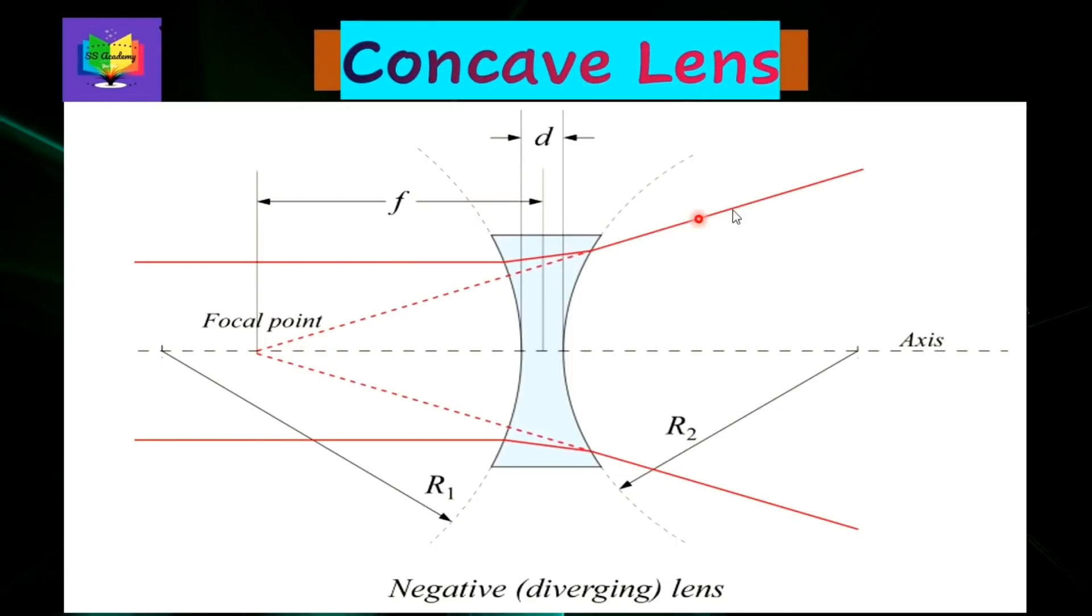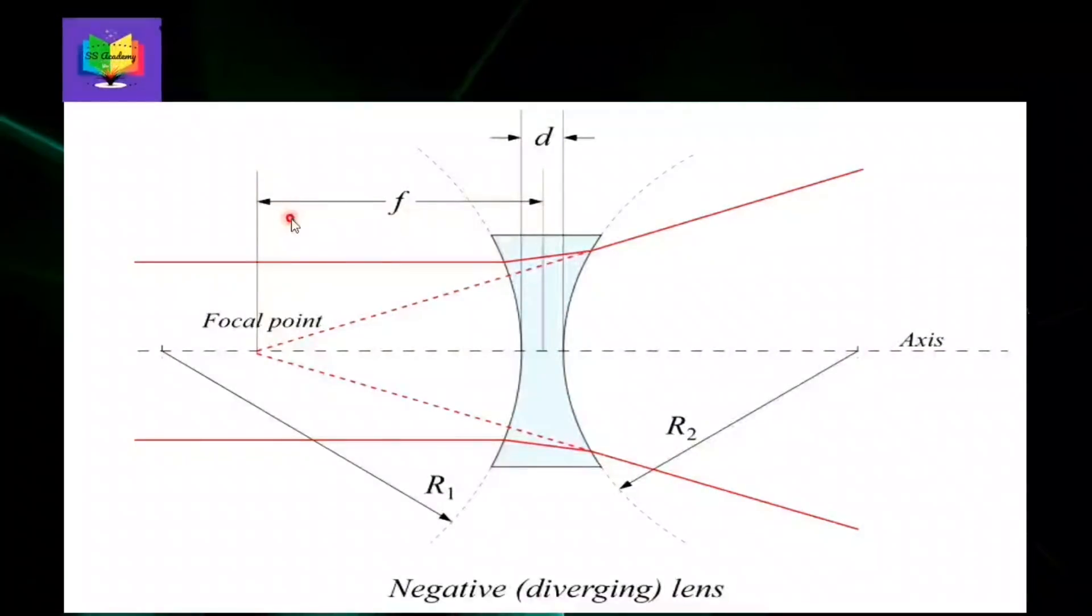So this is just a magnified view of the ray diagram in case of a concave lens. F is the focal length which is the distance between the center of the lens and the focal point. D is the thickness of the lens in the middle.